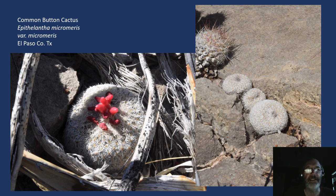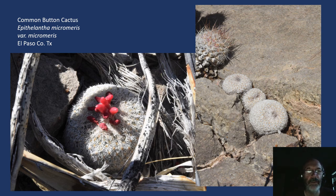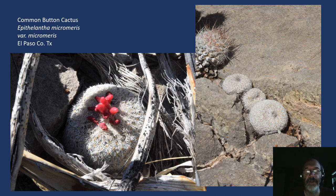Common button cactus, Epithelantha micromeris. We have two varieties of Epithelantha — I don't have a photo of bokei, but this is the more common of the two. These were photographed in the Franklin Mountains. On the left we see one in fruit; on the right, three of them right next to a Coryphantha tuberculosa. Not rare, but very cryptic — maybe golf ball size.